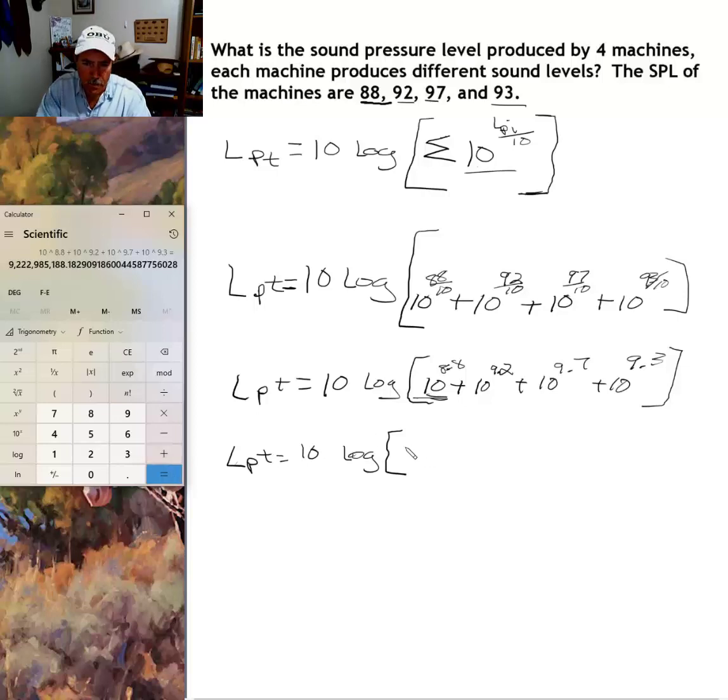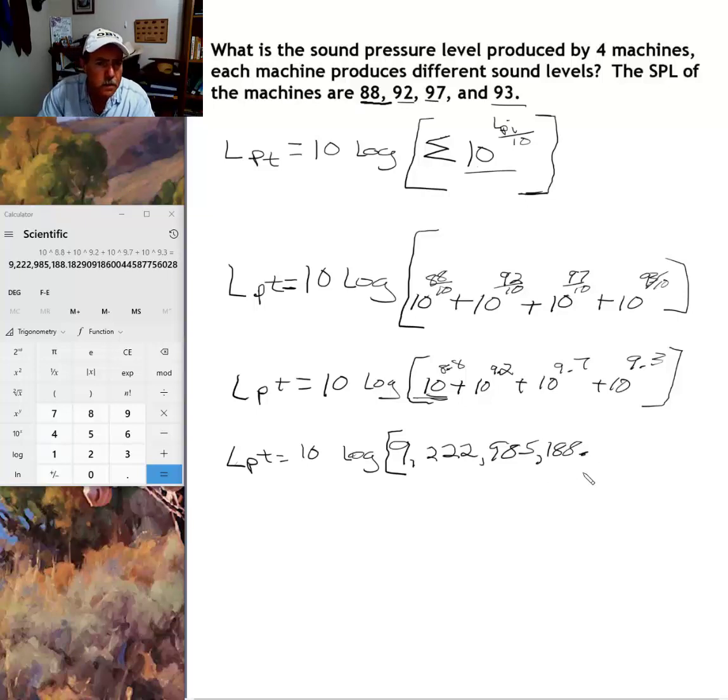I'm gonna go ahead and write this big number down: nine billion two hundred and twenty two million nine hundred and eighty five thousand one hundred and eighty eight, then we have a decimal, I'm rounding that to two decimal places, point one eight.